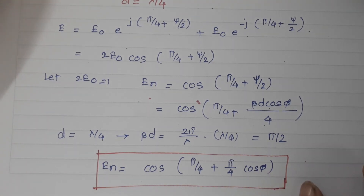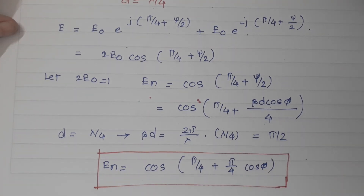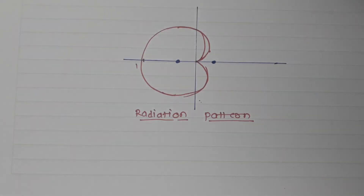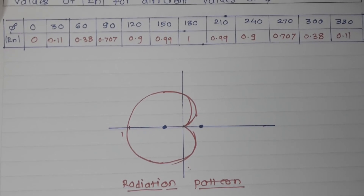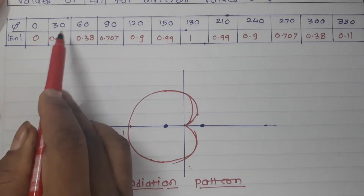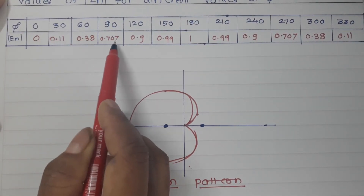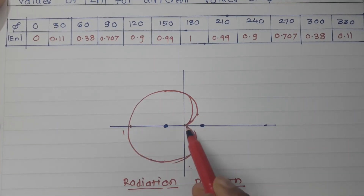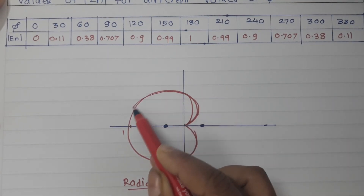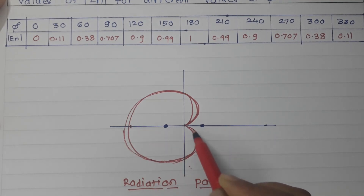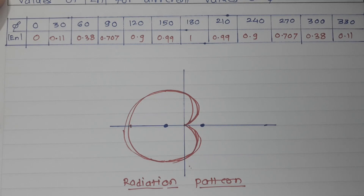Plotting the radiation pattern for d = λ/4 by substituting different values of φ: at φ = 0°, En = 0; at φ = 30°, En = 0.11; at φ = 60°, En = 0.38; at φ = 90°, En = 0.707, and so on. The resulting radiation pattern is plotted accordingly. This concludes Case 3.